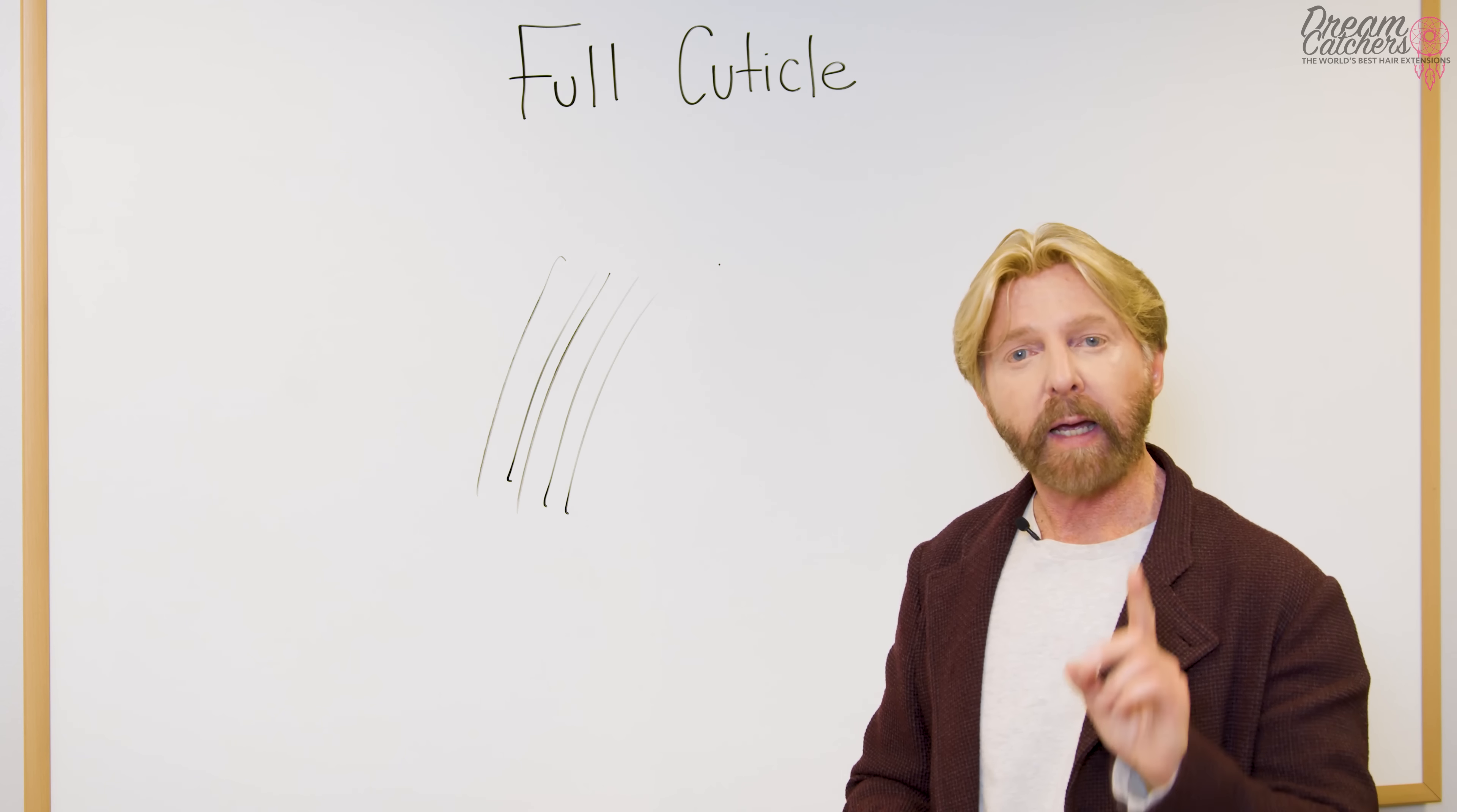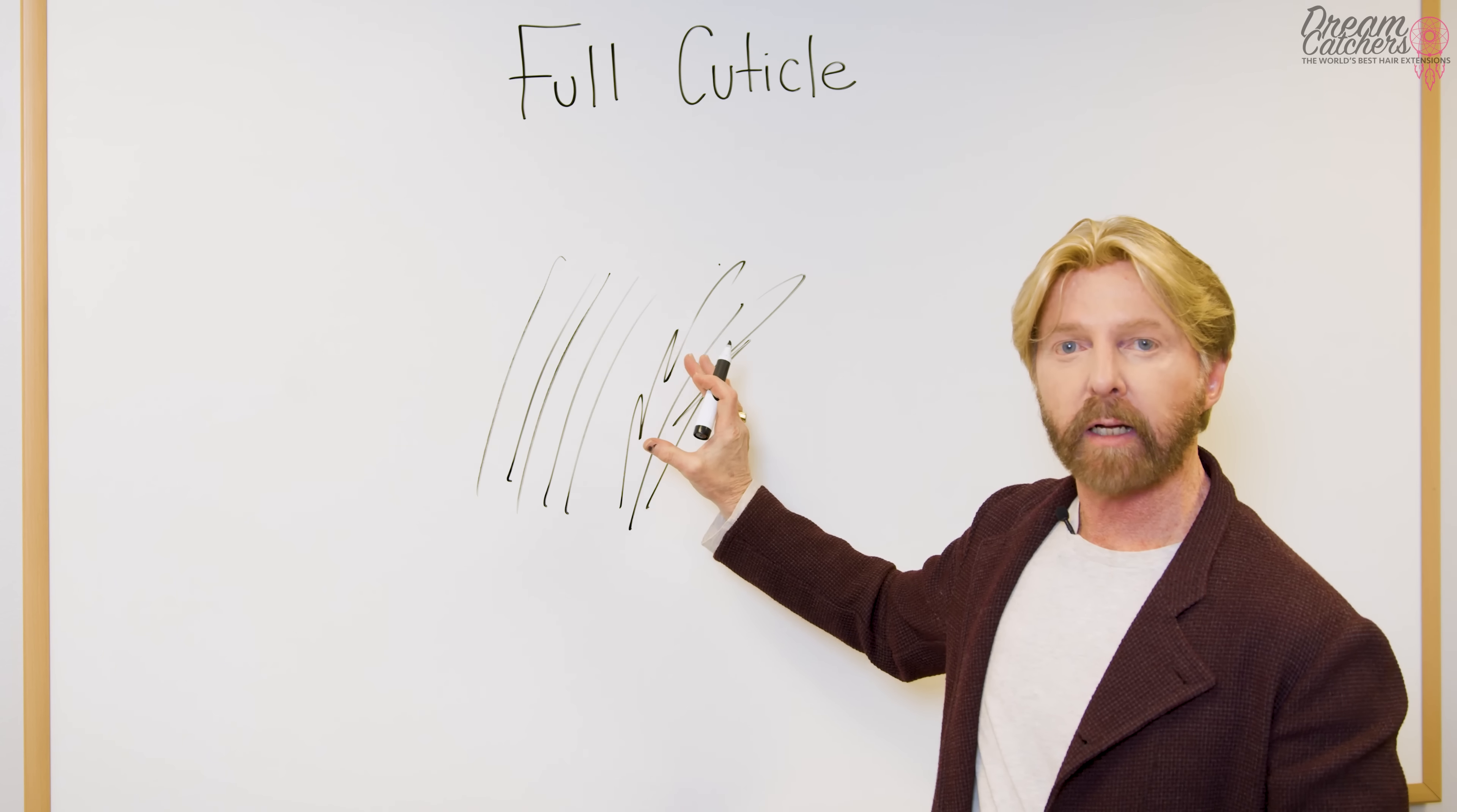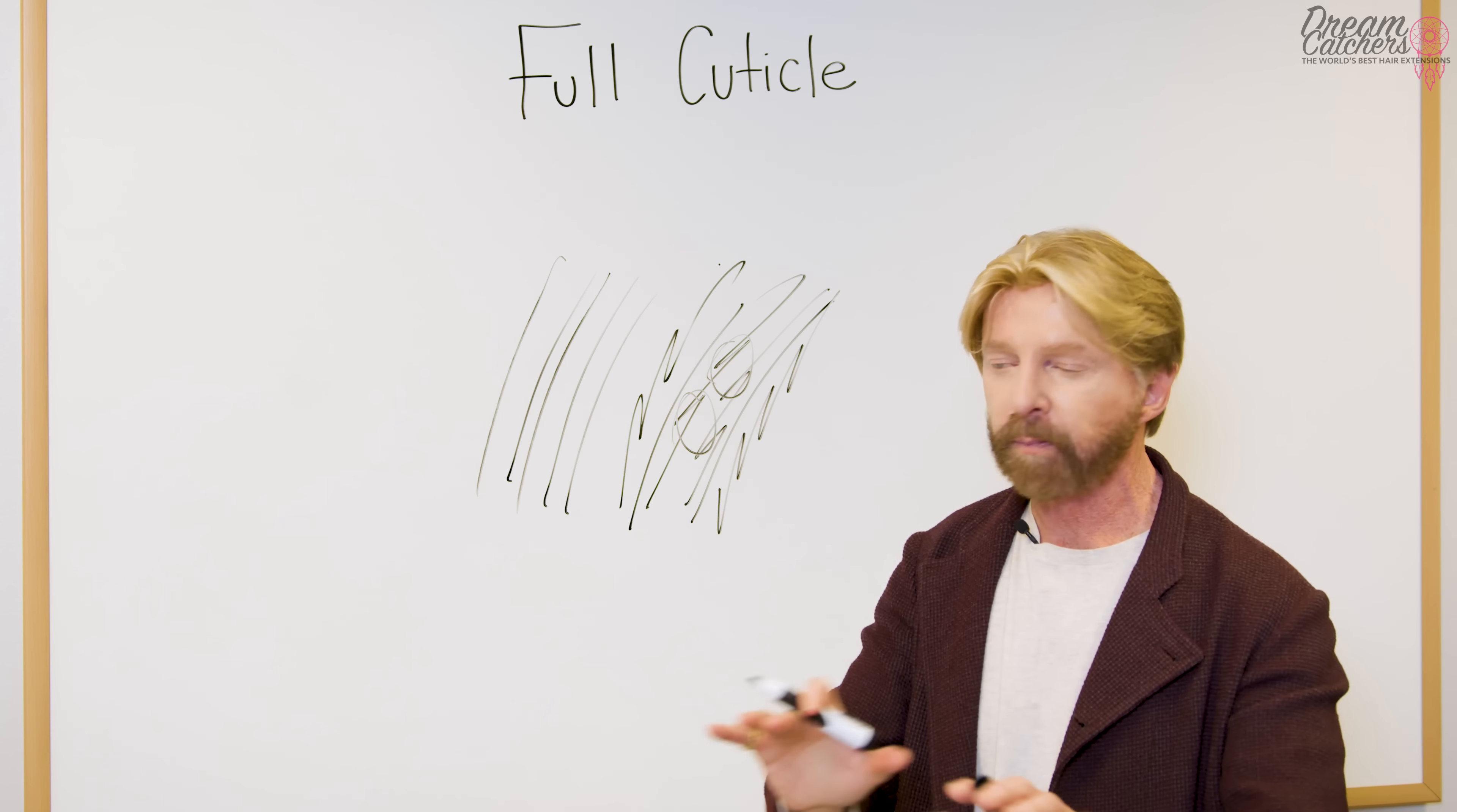So if you had a hair that had a full cuticle in, for example, let's say there's your cuticle. Now remember that the cuticle is like a fish scale. Try and imagine it like that. So if you had one going in the opposite direction, obviously you can see what's going to happen. This is going to knot. And no matter how many times you undo that knot, it's simply going to re-knot.